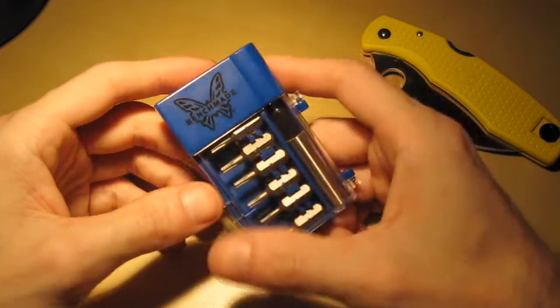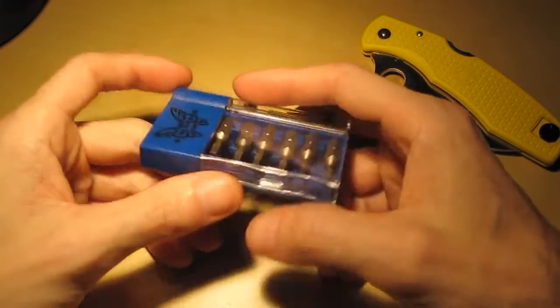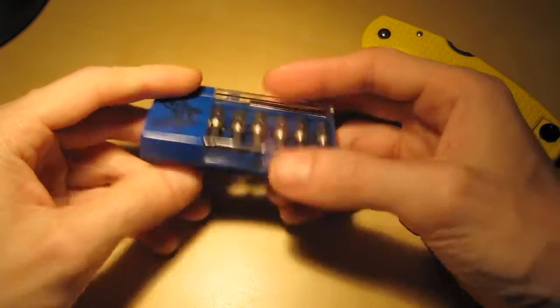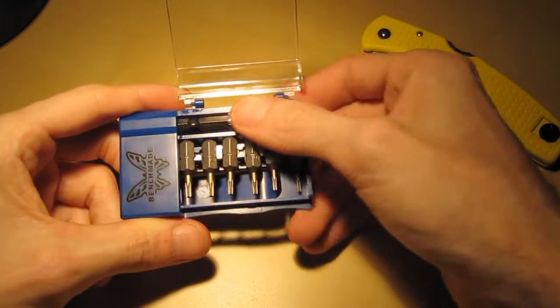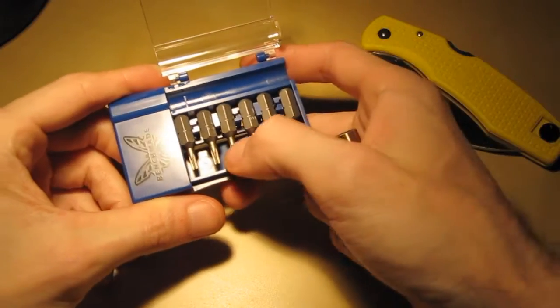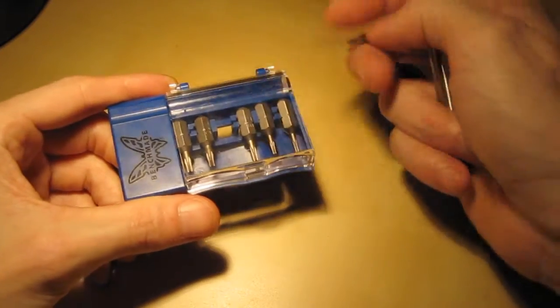This right here I got free with my Griptilian as a gift. It's pretty neat. It's got a pocket clip, and it's all torx. Basically, you just open it up, get your little extension out. Whichever bit you want, you get that out.